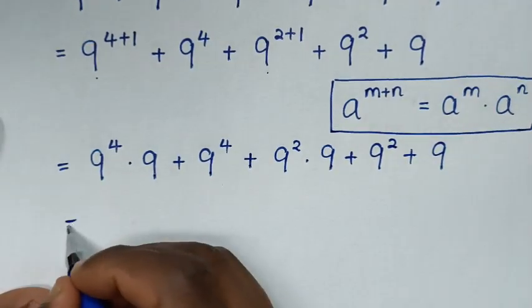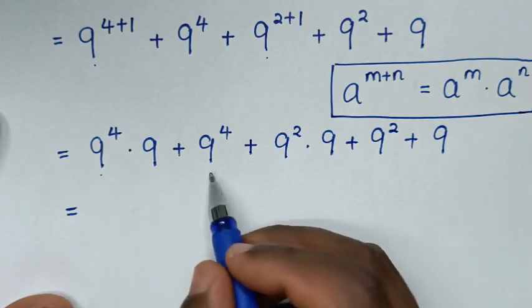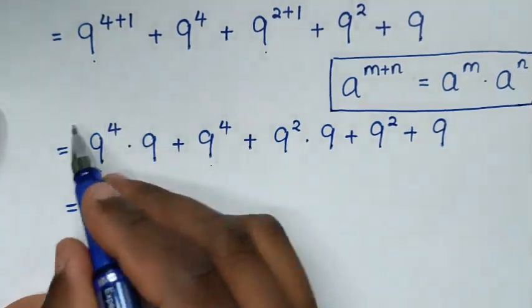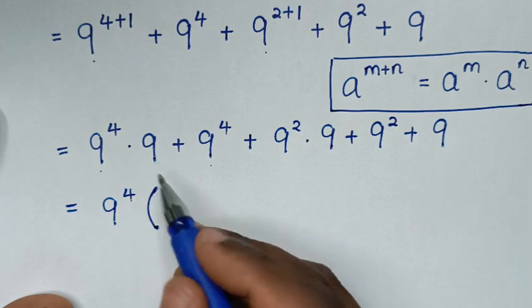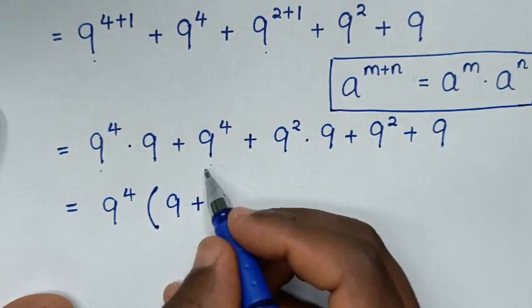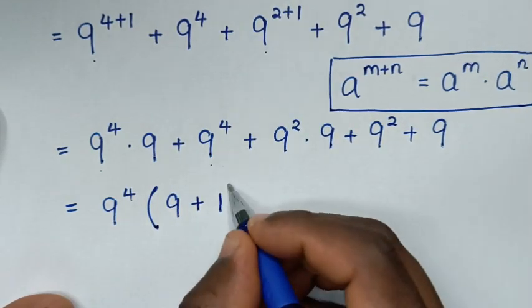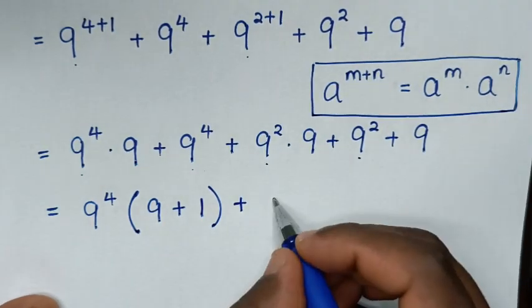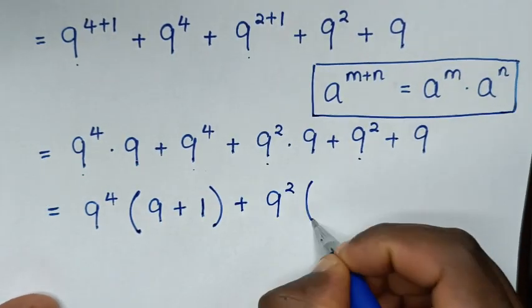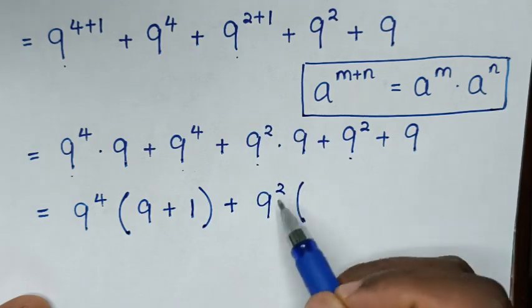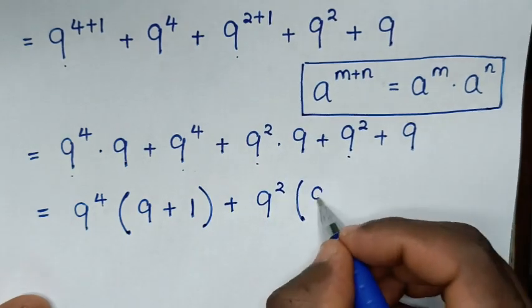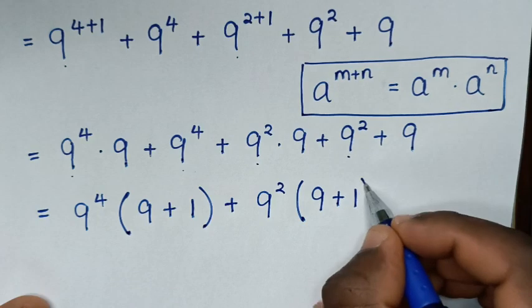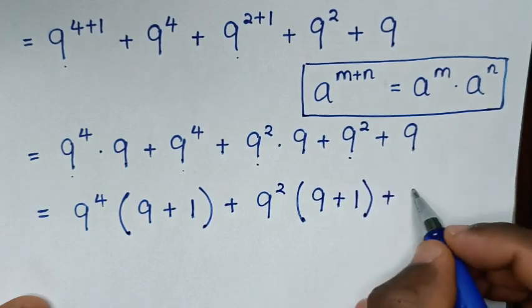Then in the next step it will be equal to: from here 9 power 4 is common, so we'll take 9 power 4 out of the bracket. This here divided by 9 power 4 is 9, plus 9 power 4 divided by 9 power 4 is 1, bracket. Plus, into here 9 power 2 is common, so we'll take 9 power 2 out of the bracket. This here divided by 9 power 2 is 9, then plus 9 power 2 divided by 9 power 2 is 1, bracket. Then plus this 9.